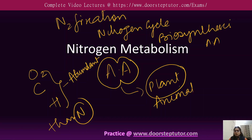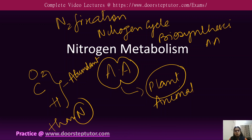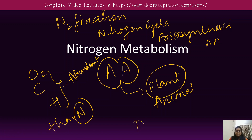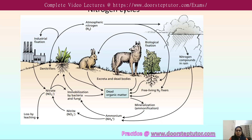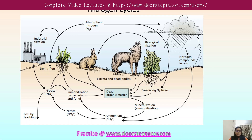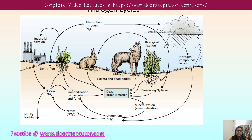Nitrogen is one of the essential elements of all amino acids, and it is also a component of nucleic acids — the same components that form the DNA of all living things. Nitrogen is also an important component of chlorophyll, which is the site for carbohydrate formation, meaning photosynthesis occurs there.